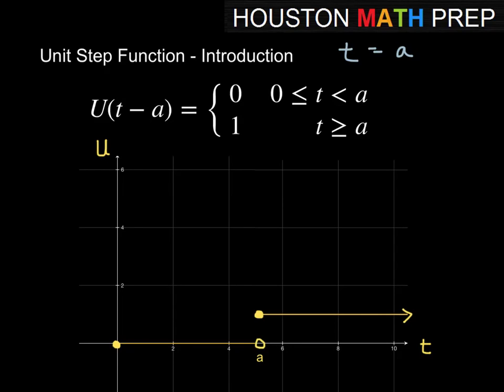When we're less than a, we get a value of 0, so you can see this is modeling when the current or whatever it is is turned off. And then as soon as we hit this t value of a, we flip the switch and the value becomes 1 and is 1 forevermore until we decide to turn it off again. It's just a piecewise function.